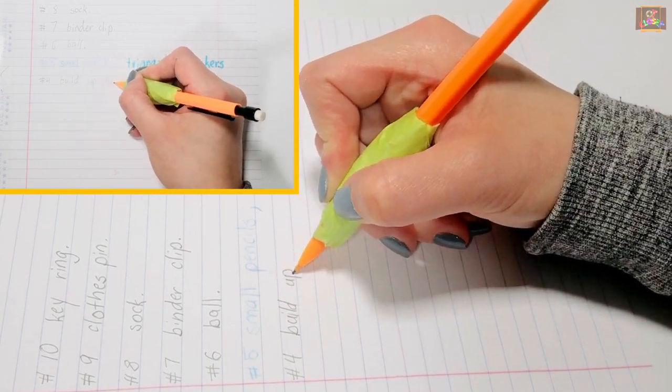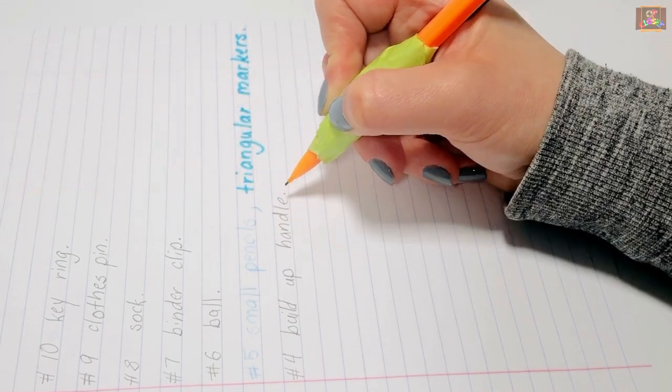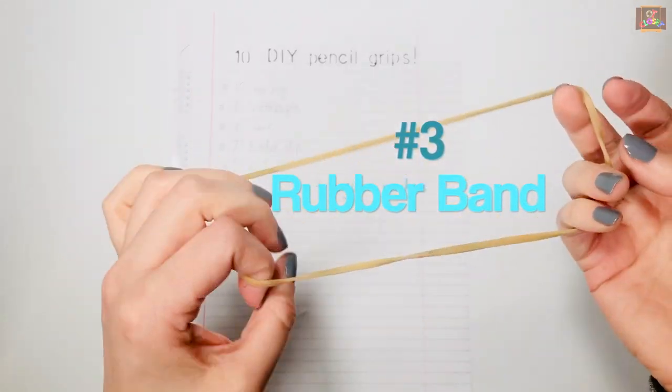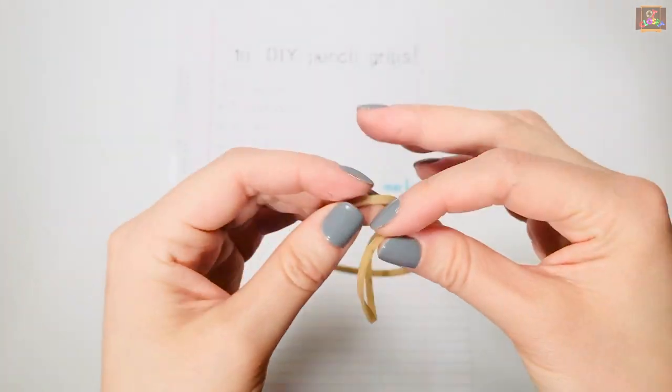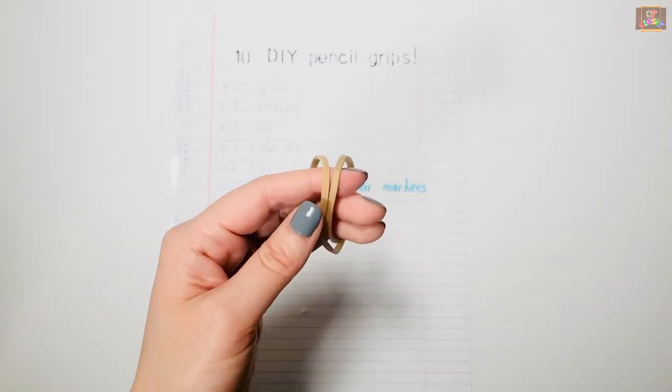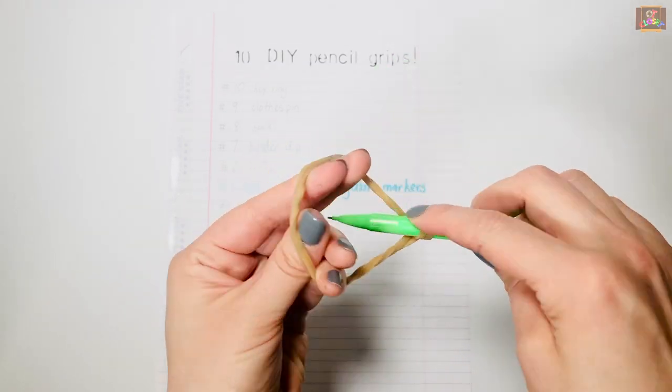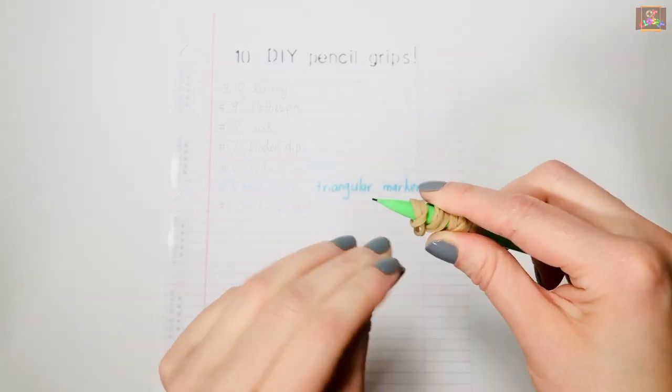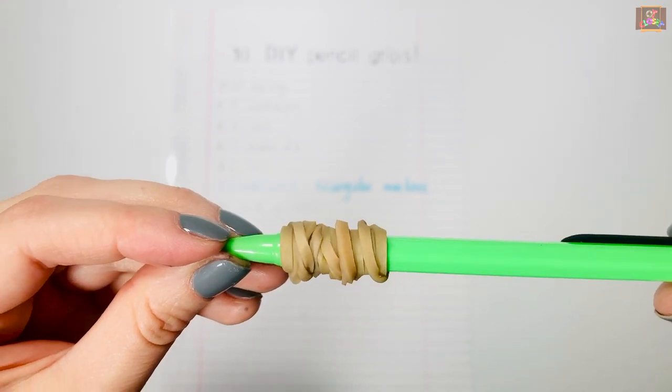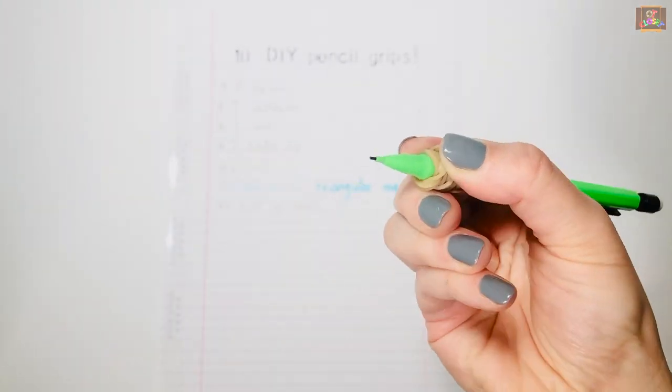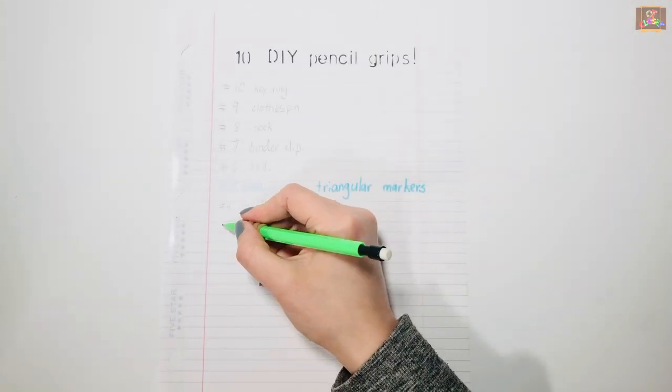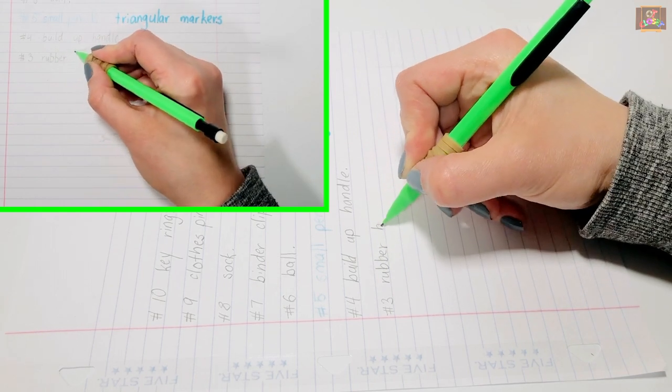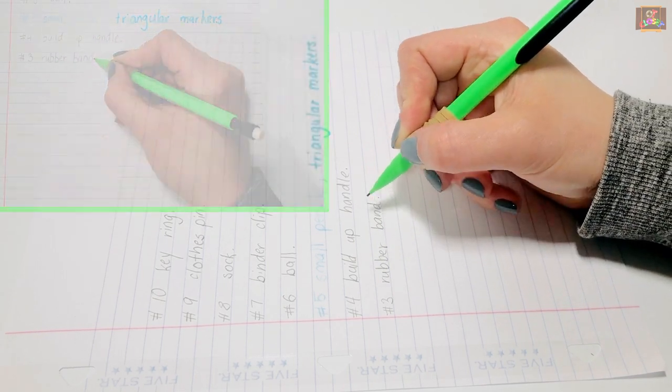Number 3: Rubber Band. Twist it around the pencil until it's completely finished. The rubber band provides greater surface area and also prevents the slipping of the fingers down on the pencil.